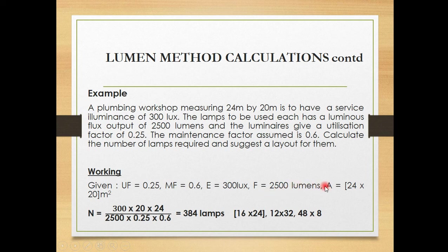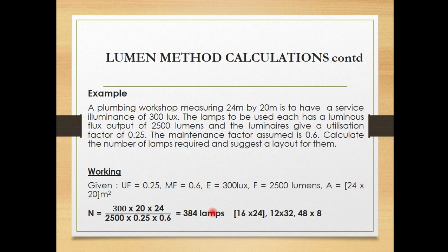Substituting the given values into the formula: illuminance E = 300 lux, flux F = 2,500 lumens, area A = 20 × 24 square meters, UF = 0.25, MF = 0.6. Working this out gives N = 384 lamps. Note that sometimes you may be asked to find E or F instead, by transposing the formula accordingly.